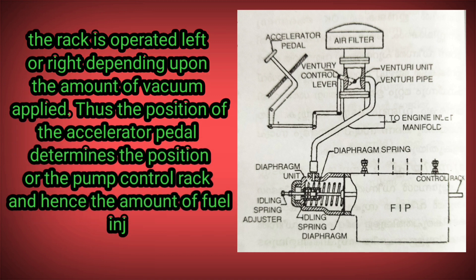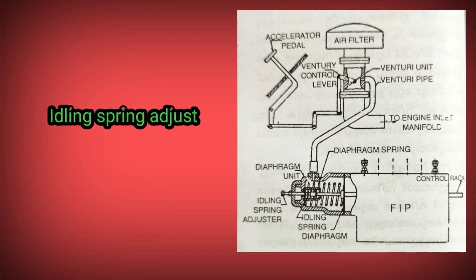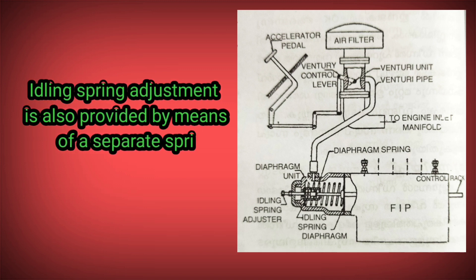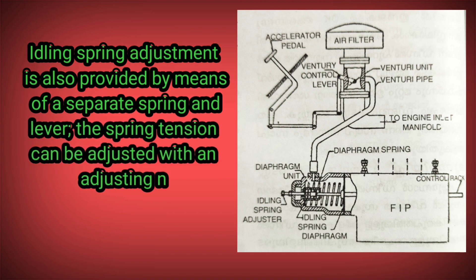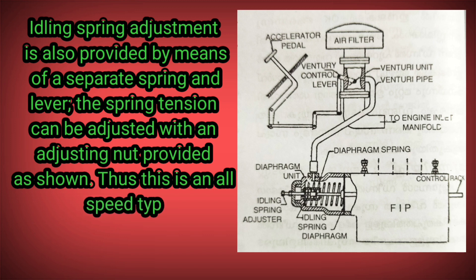And hence the amount of fuel injected. Idling spring adjustment is also provided by means of a separate spring and lever. The spring tension can be adjusted with an adjusting nut as shown. Thus, this is an all-speed type of governor.